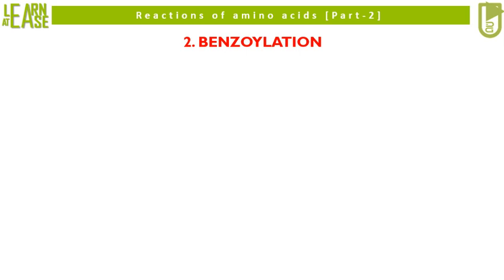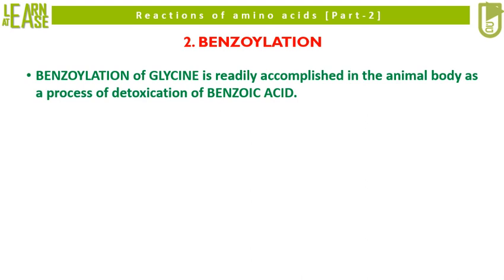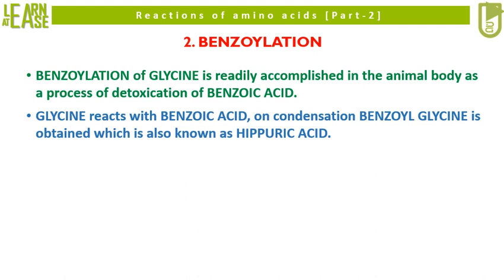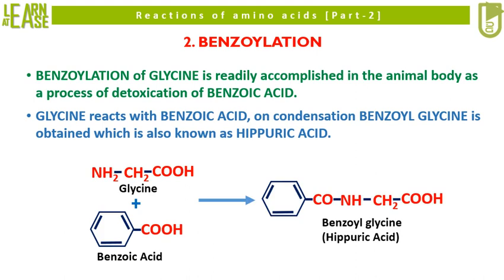The second reaction I will explain is benzoylation. Benzoylation of glycine is readily accomplished in the animal body as a process of detoxification of benzoic acid. Glycine reacts with benzoic acid; on condensation, benzoyl glycine is obtained, which is also known as hippuric acid. In this way, benzoic acid, which is a toxic molecule if it gains entry in the body, gets neutralized.